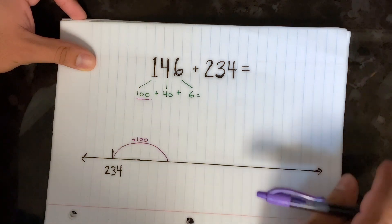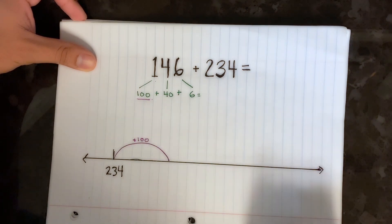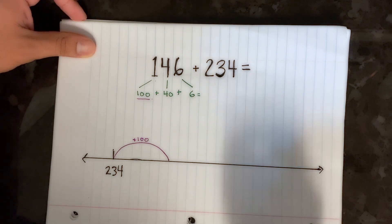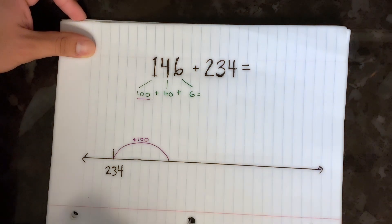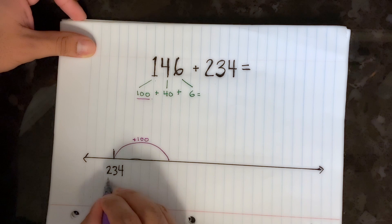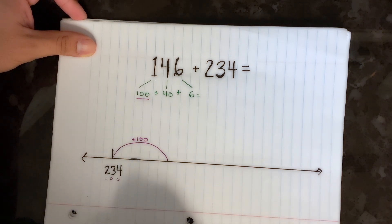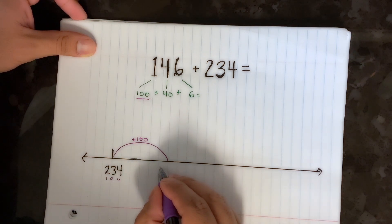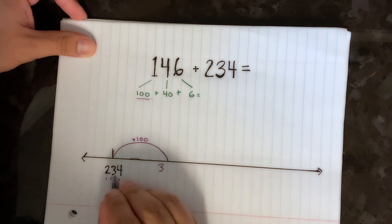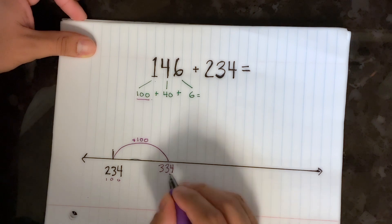So we're going this way and getting larger — we just jumped a hundred more. If you don't know how much a hundred more is, you can put a hundred underneath and look at your hundreds column: two plus one is three. These stay the same, so we have 334.